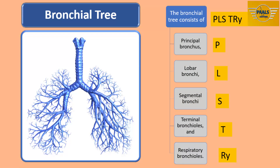The bronchi and all of their subsequent branches are collectively referred to as the bronchial tree. It actually has the appearance of a tree, as you can see from the illustration. The bronchial tree is made up of: one, the principal bronchus; two, the lobar bronchi; three, segmental bronchi; four, terminal bronchioles; and respiratory bronchioles. The mnemonic 'please try' can be helpful.